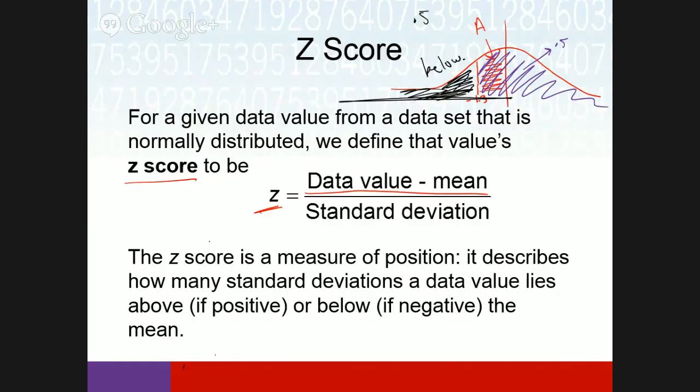Drawing a curve is very helpful here and you can get partial credit by shading the right area, even if you make the wrong conclusion from the table. I can see you understand what the problem is asking. So drawing your curve and shading correctly shows your reasoning.